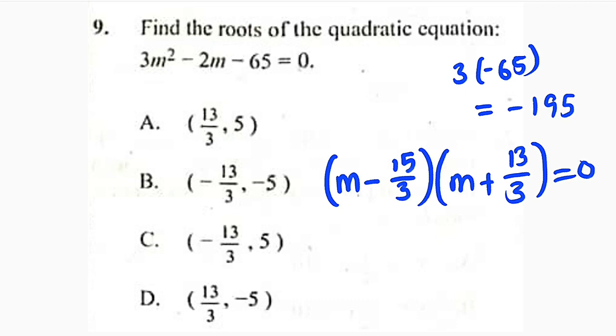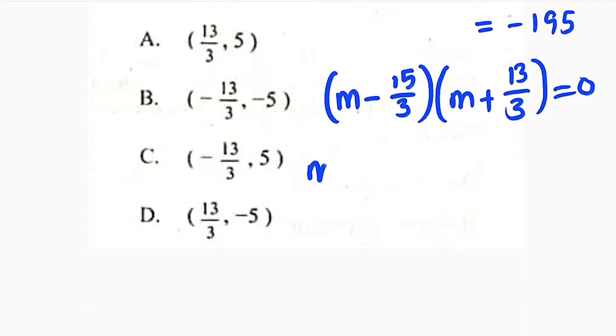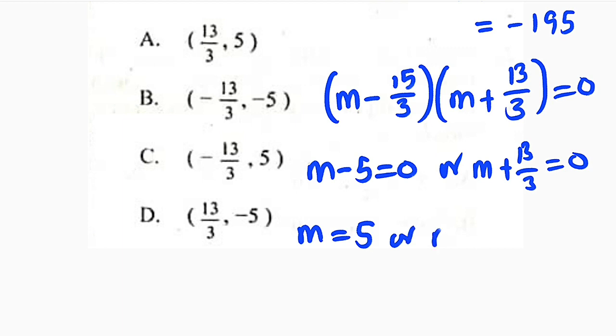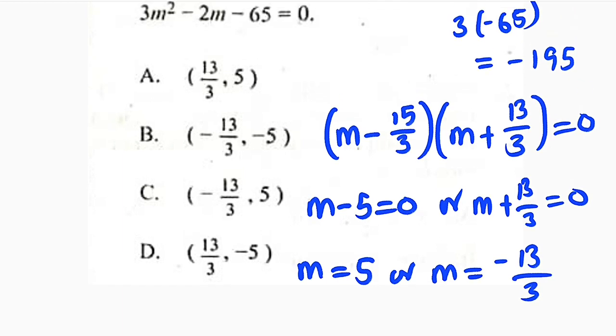You set the whole of this equal to 0. Which implies that either m minus 5 equal to 0, because 15 divided by 3 is 5. Or m plus 13 divided by 3 is equal to 0. So m here could either be positive 5 if this crosses over. Or m equal to negative 13 divided by 3 if positive 13 divided by 3 crosses over. So where is the right answer? m is 5 and negative 13 divided by 3 which is option C.